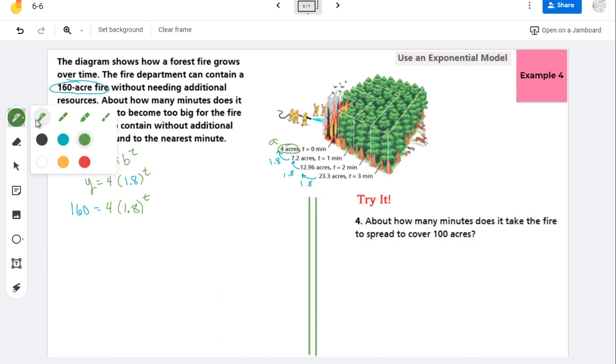So the first thing I do is I get my exponential alone. So I'm dividing each side of the equation by 4. So I get that 40 is equal to 1.8 to the T-th power, I guess. I don't actually know how to say that, but teeth makes me want to clack my teeth together.